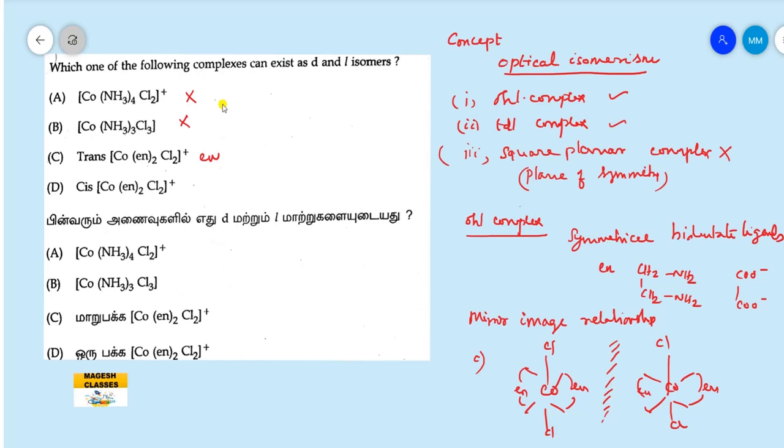In case of D, this is the cis. Cis means that the central atom is cobalt, the Cl atoms are in the adjacent position, and the ENs are attached here. When the mirror images are noticed, it will be like this: here Cl Cl and EN is there, and here it will be like this.